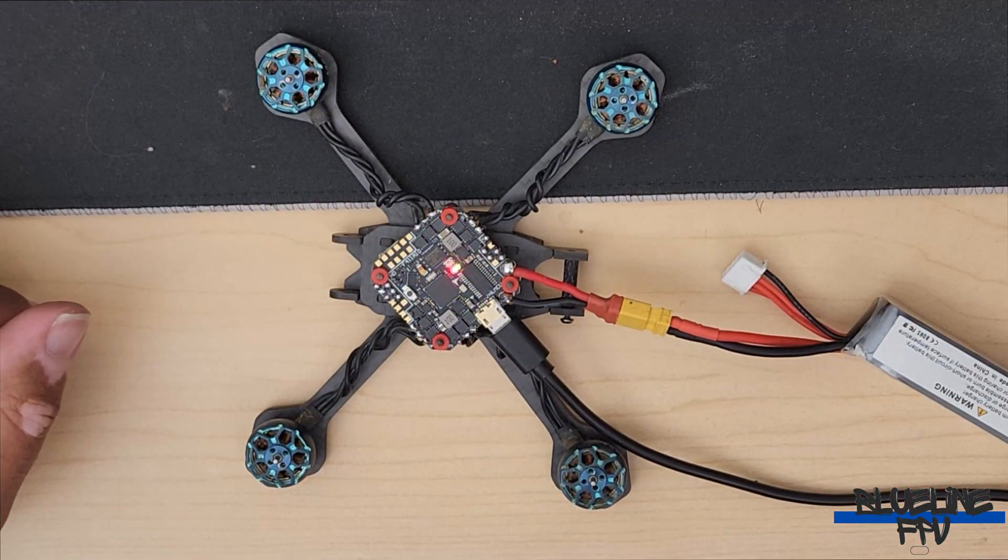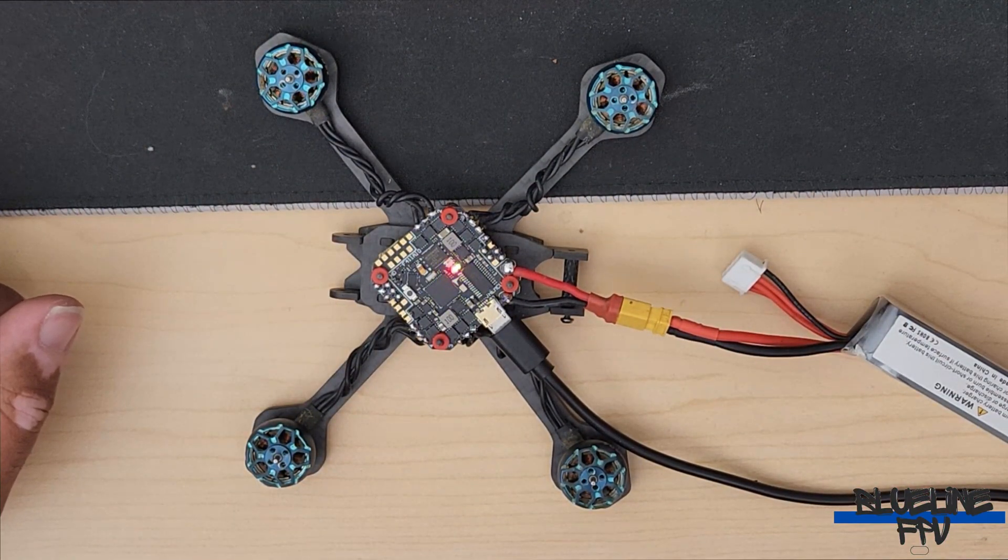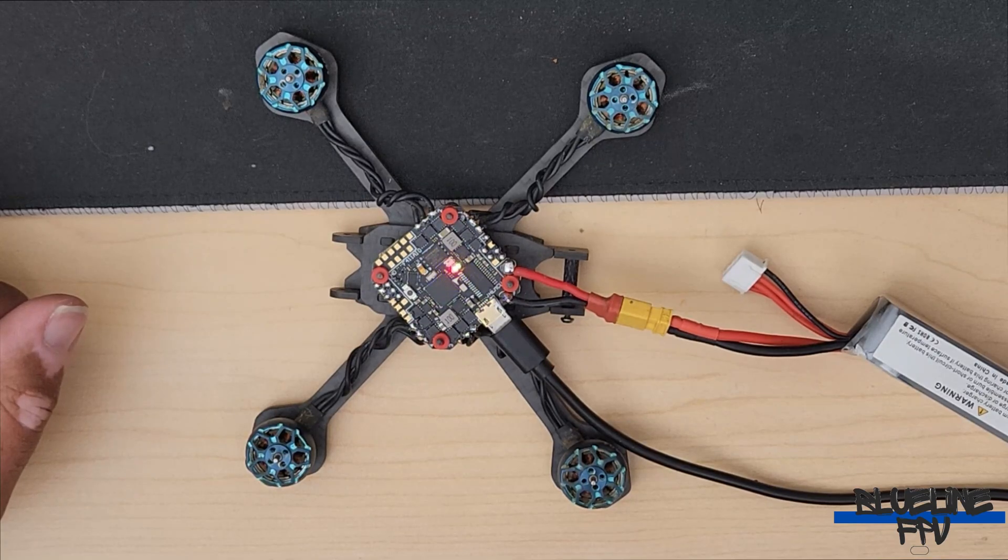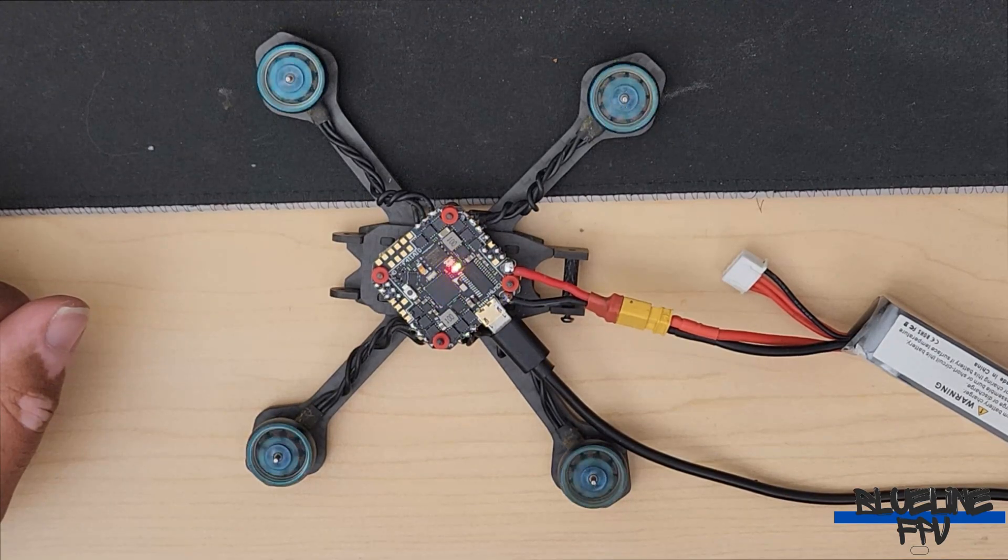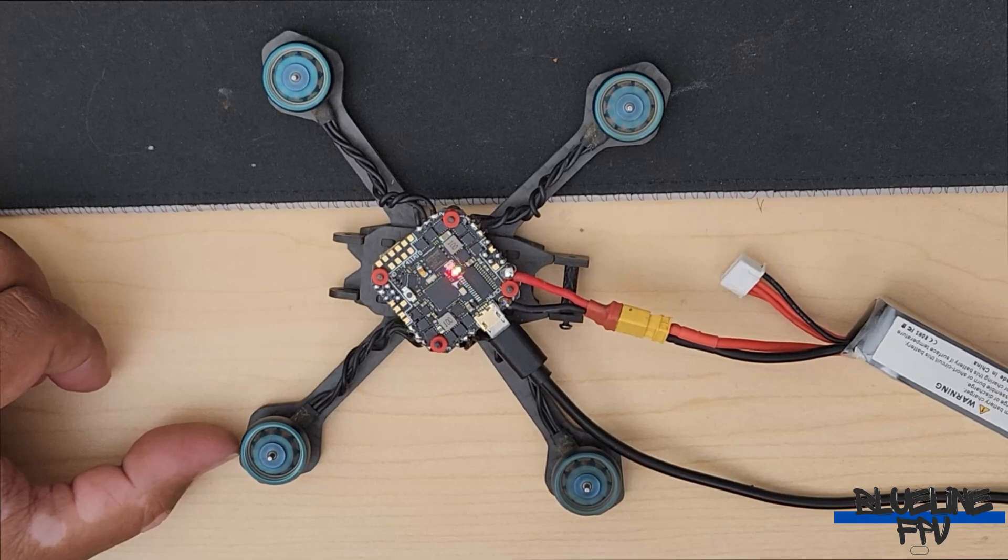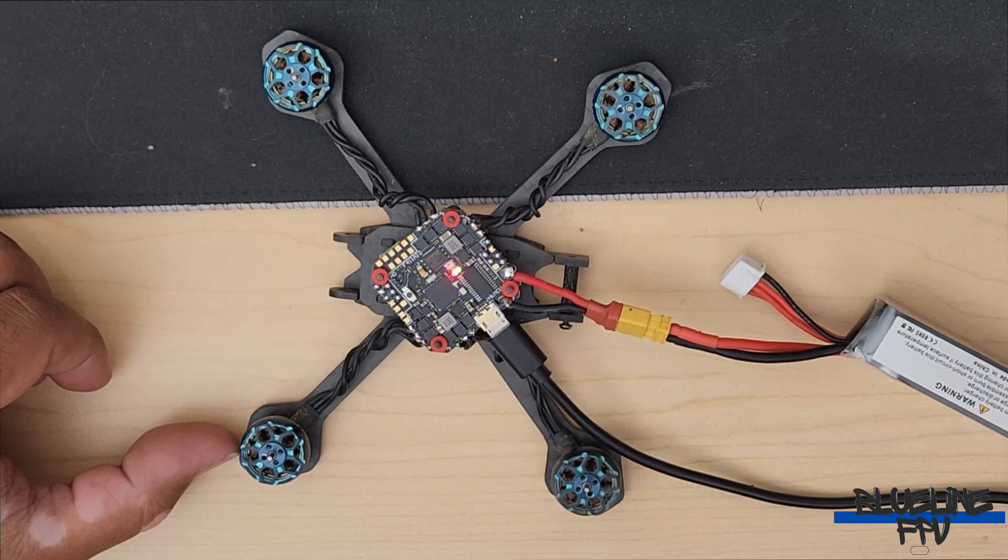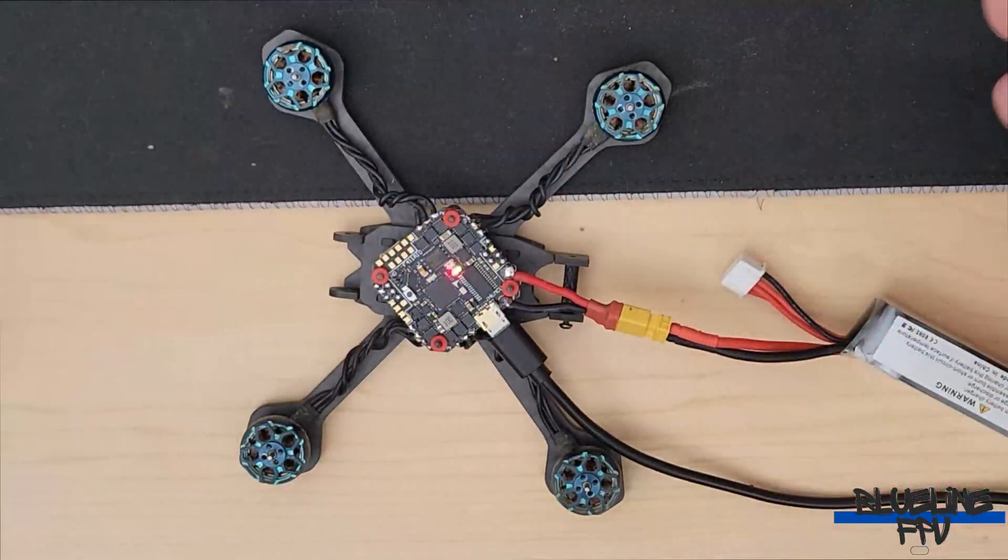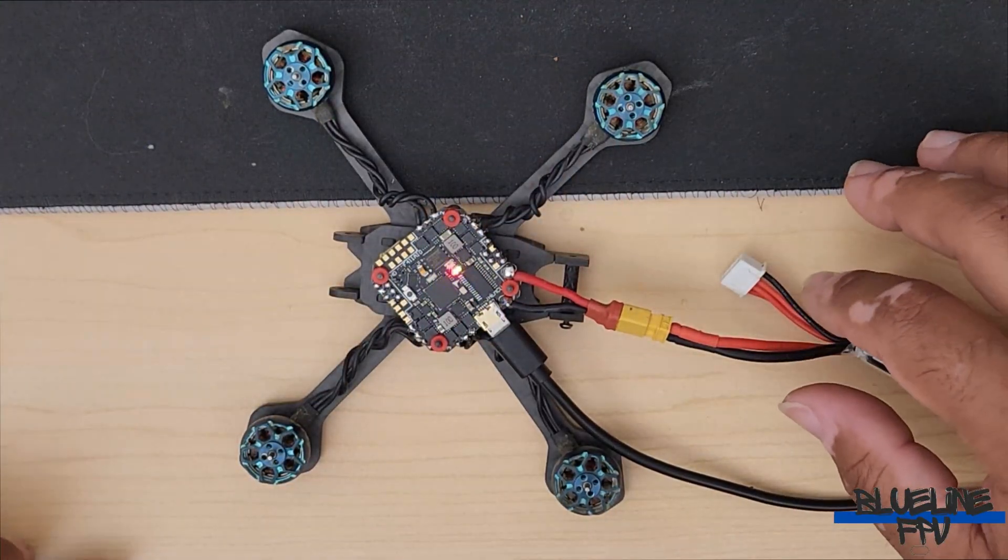We got tones so that's a good thing. We'll go into our flight control software on the computer and make sure our motors are spinning. It looks like all of our motors are spinning so that is a good thing. We'll go ahead and disconnect and go back over to the bench to put the rest of the stuff on.